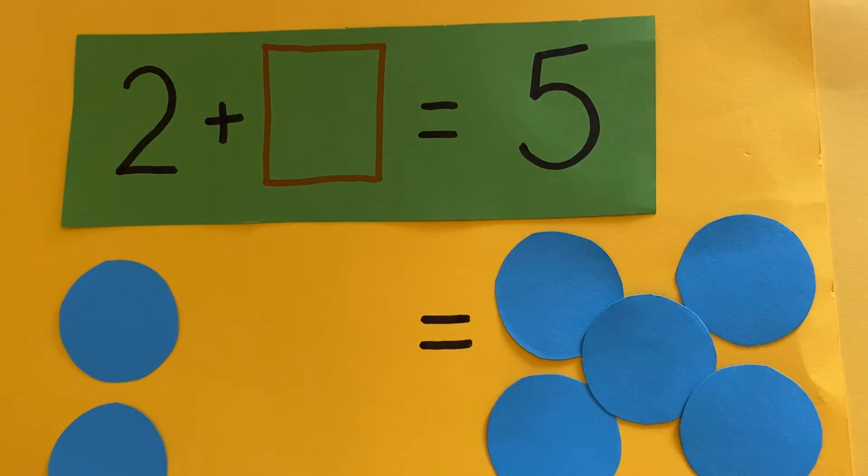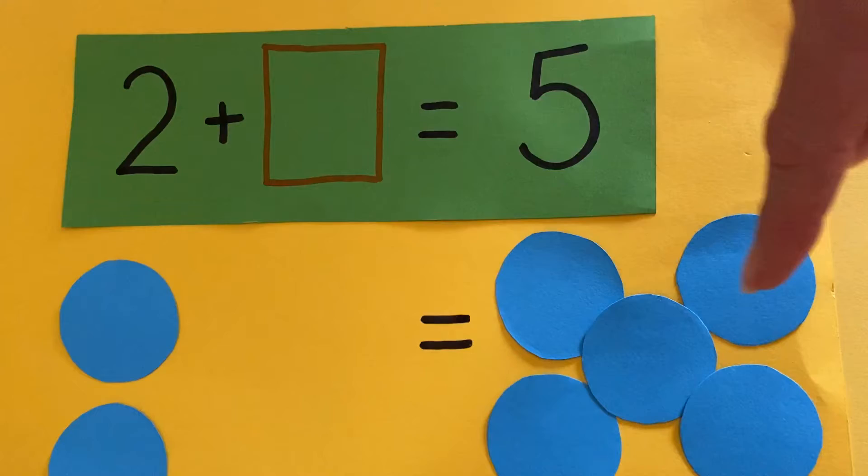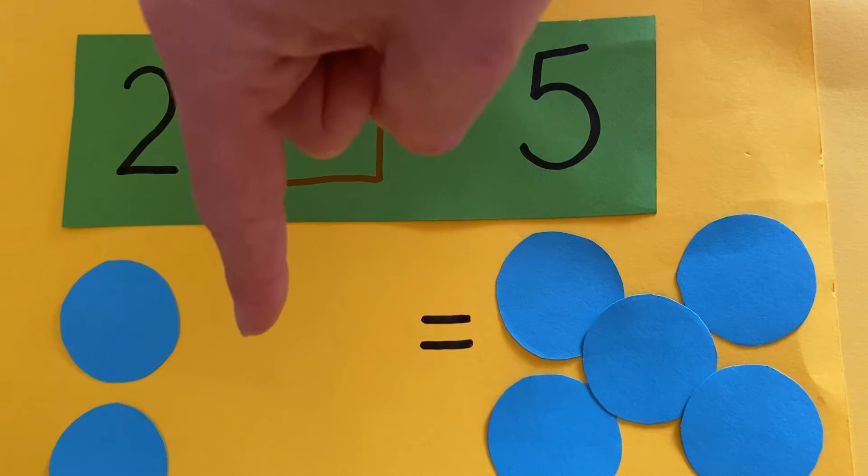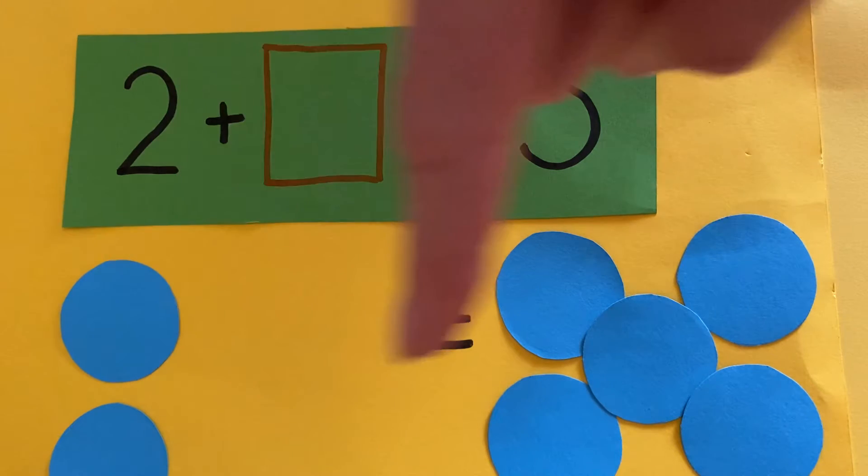And I'm going to need five counters this side. Oh, hang on. That's not equal. That's not the same as. How many more counters do I need this side to make it equal, to make it the same?